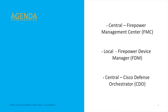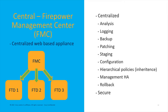So the management options. You have three general management options. The first is Firepower Management Center, which is the local centralized management option. Then you have Firepower Device Manager, which is the separate and discrete manager hosted on the firewall itself. And then you have the central cloud-based management tool called Cisco Defense Orchestrator. There are some good nuances between all three, and we'll get into them as we go through the rest of the slides.